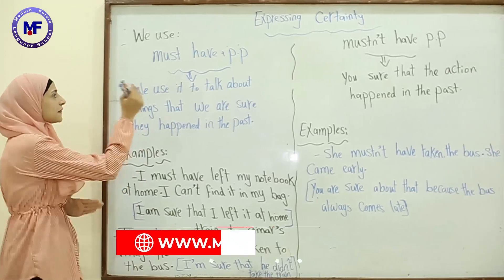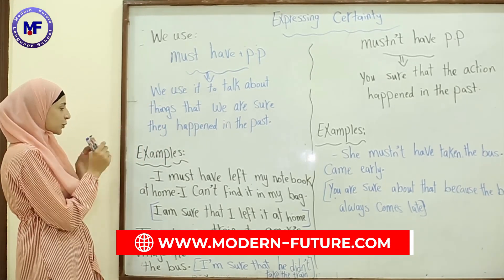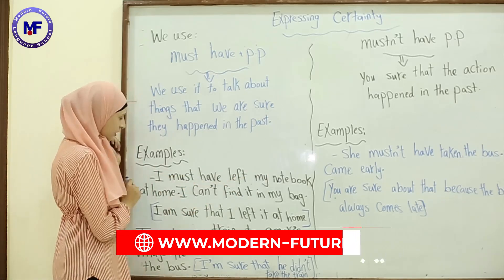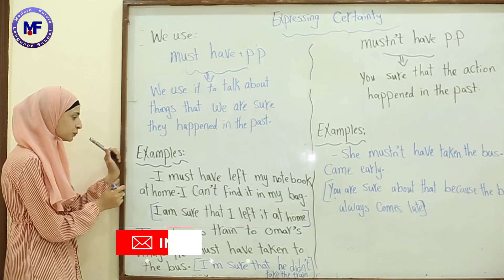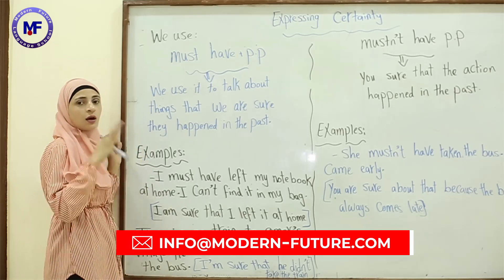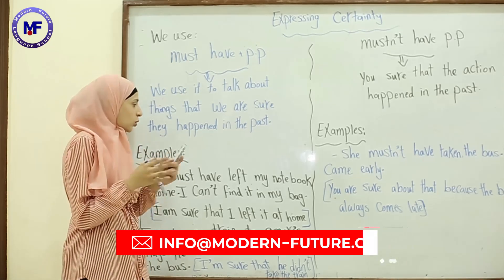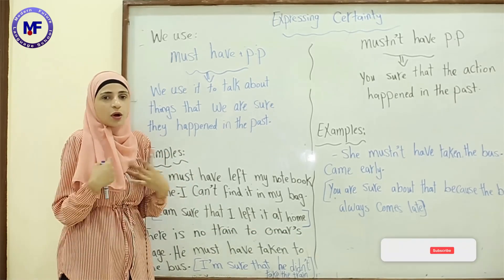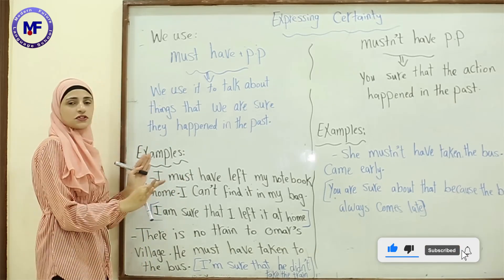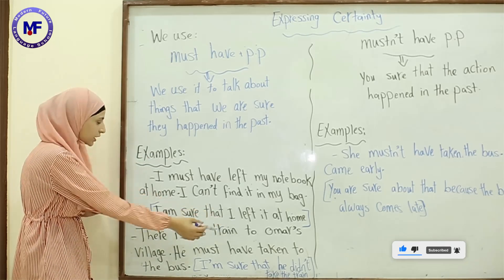For example: 'I must have left my notebook at home — I can't find it in my bag.' I'm sure about that. I don't know where my notebook is, so I say 'I must have left it at home.' I'm sure about that.